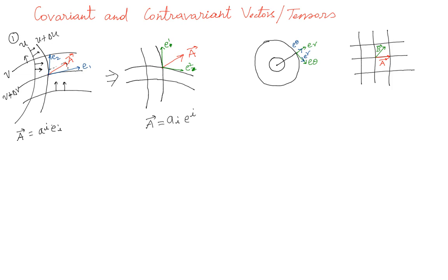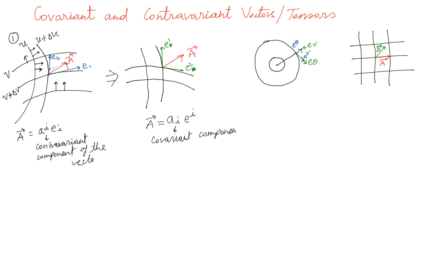The reason there is an upper index here and a lower index here is just to differentiate between the two. This is called the contravariant component of the vector, and the other is called the covariant component of the vector, also referred to as the covariant vector. There is a major difference between these two components in the way they transform under coordinate transformation.